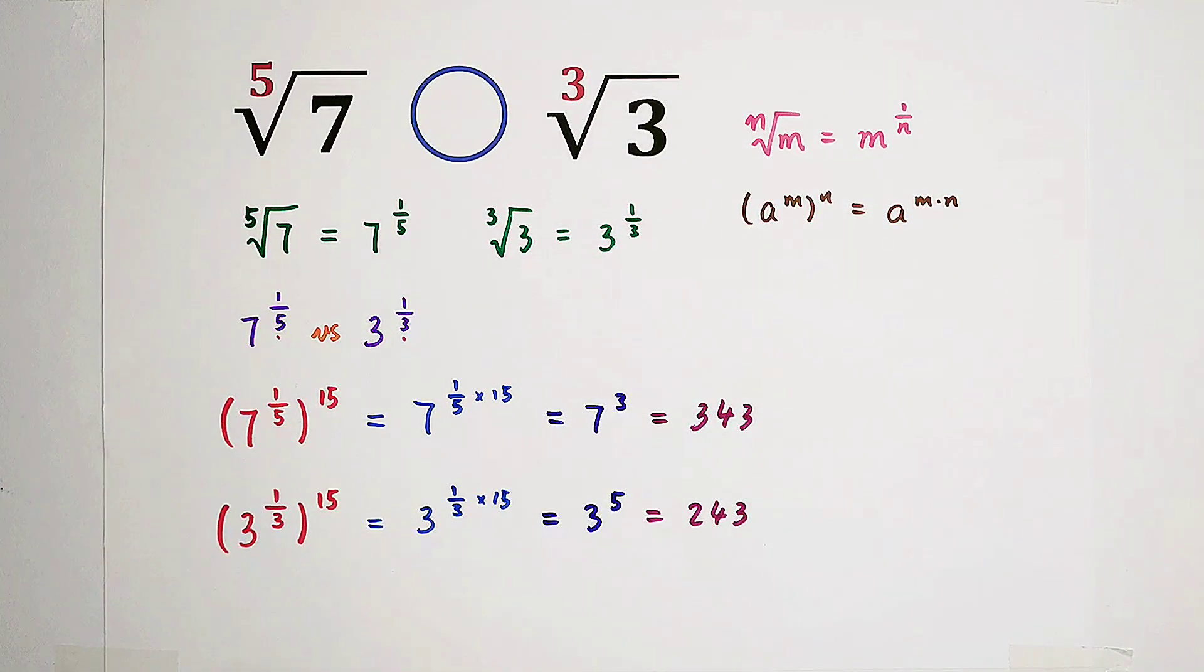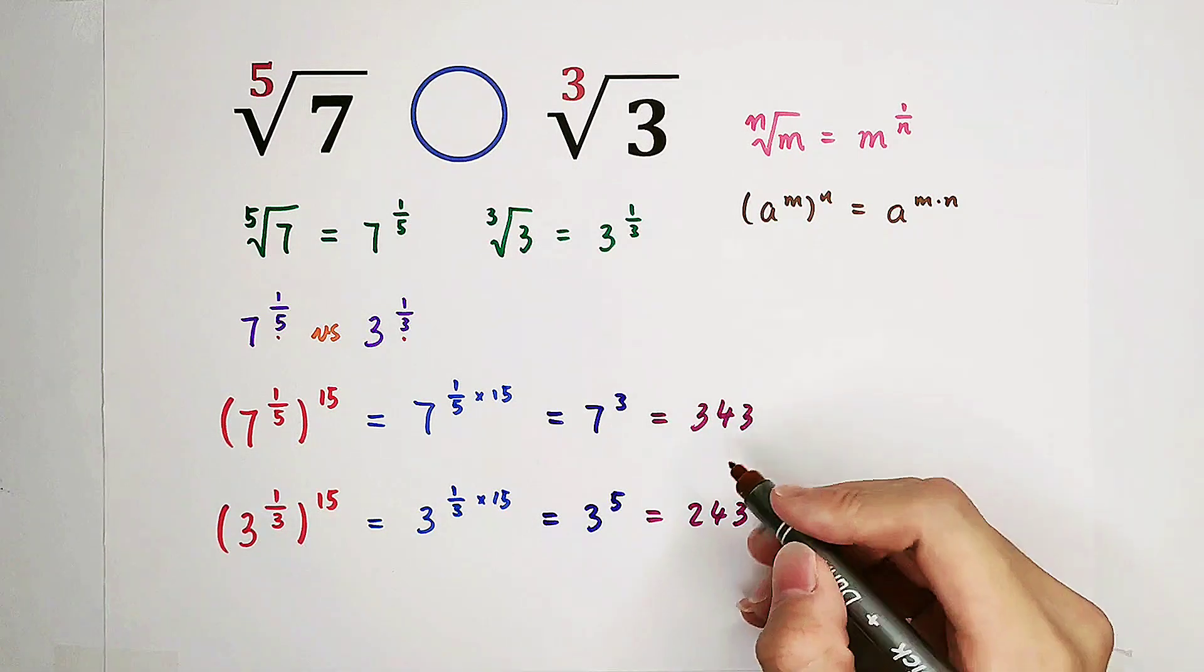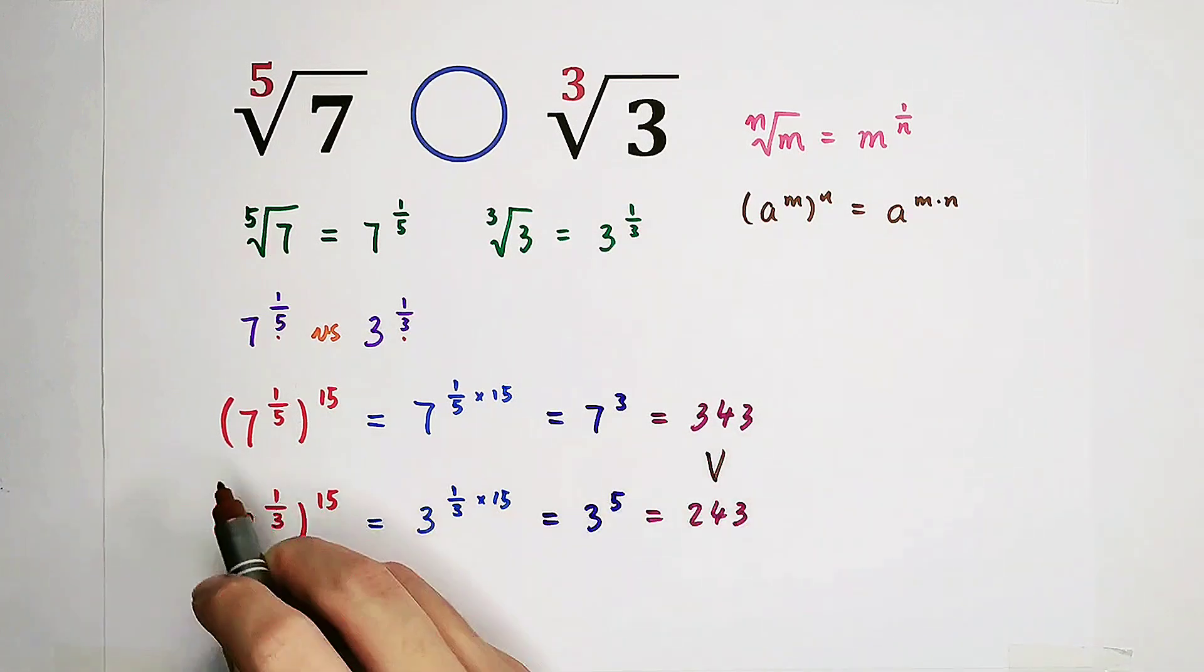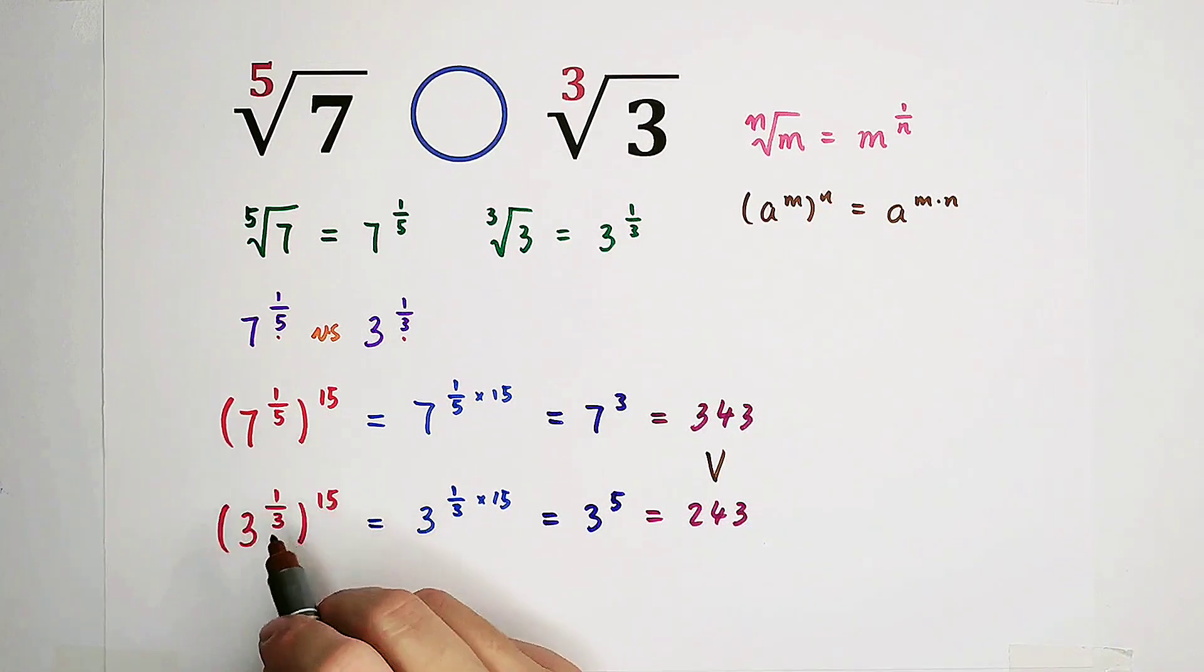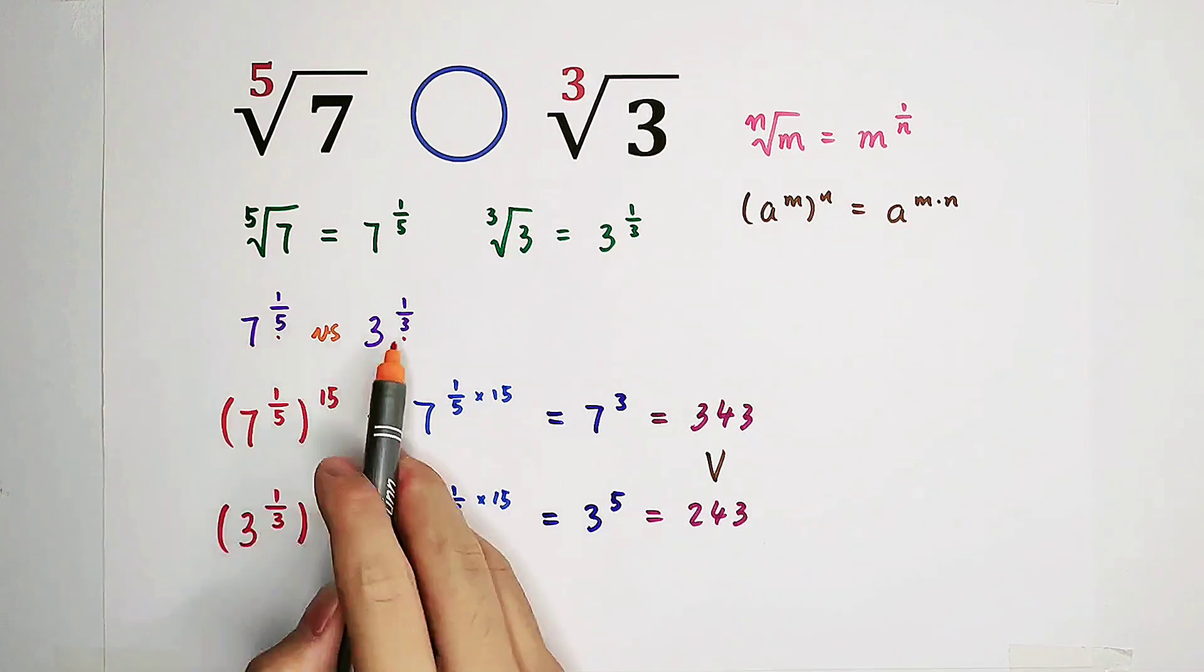Oh! Now we can say that 3 to the power of 1 third or to the power of 15 is less than 7 to the power of 1 fifth or to the power of 15. Can we just say that this one is greater than this one?